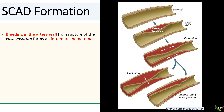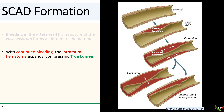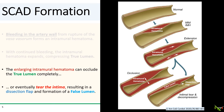A hematoma then forms in the arterial wall from the accumulation of blood. As the bleeding continues, the hematoma expands and can start to compress the lumen. The hematoma can eventually completely occlude the lumen, and as it continues to expand, it can cause the intima to burst and tear, which decompresses the arterial wall and can sometimes cause flow to temporarily improve. But now you have an actual dissection from the torn intima.